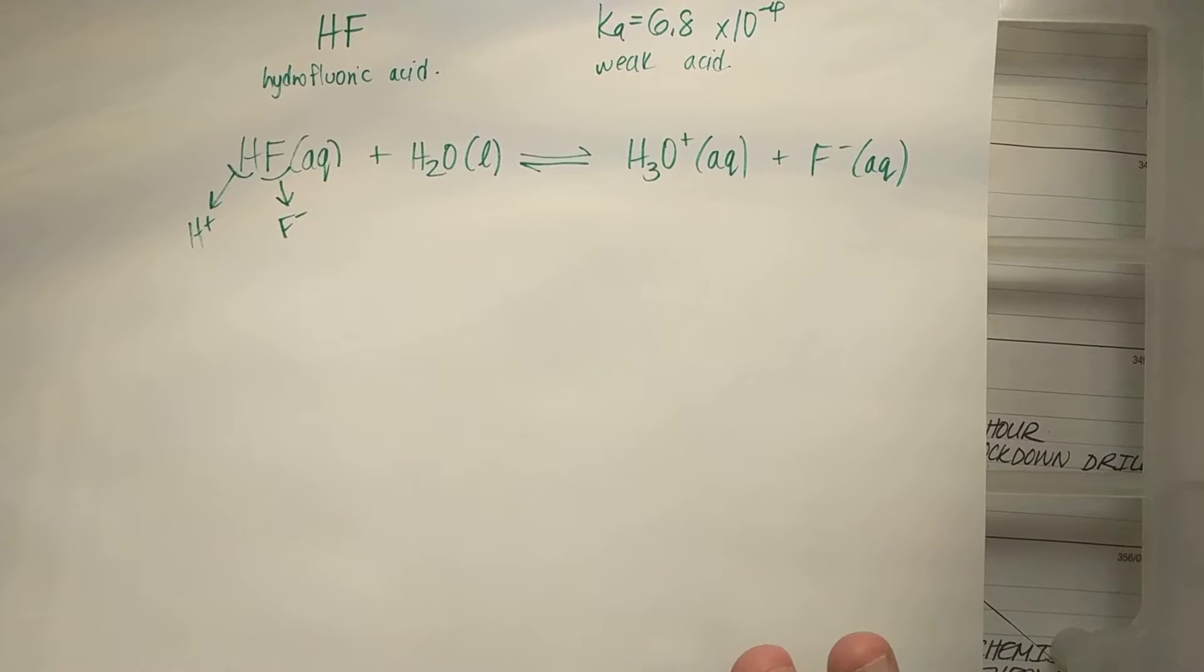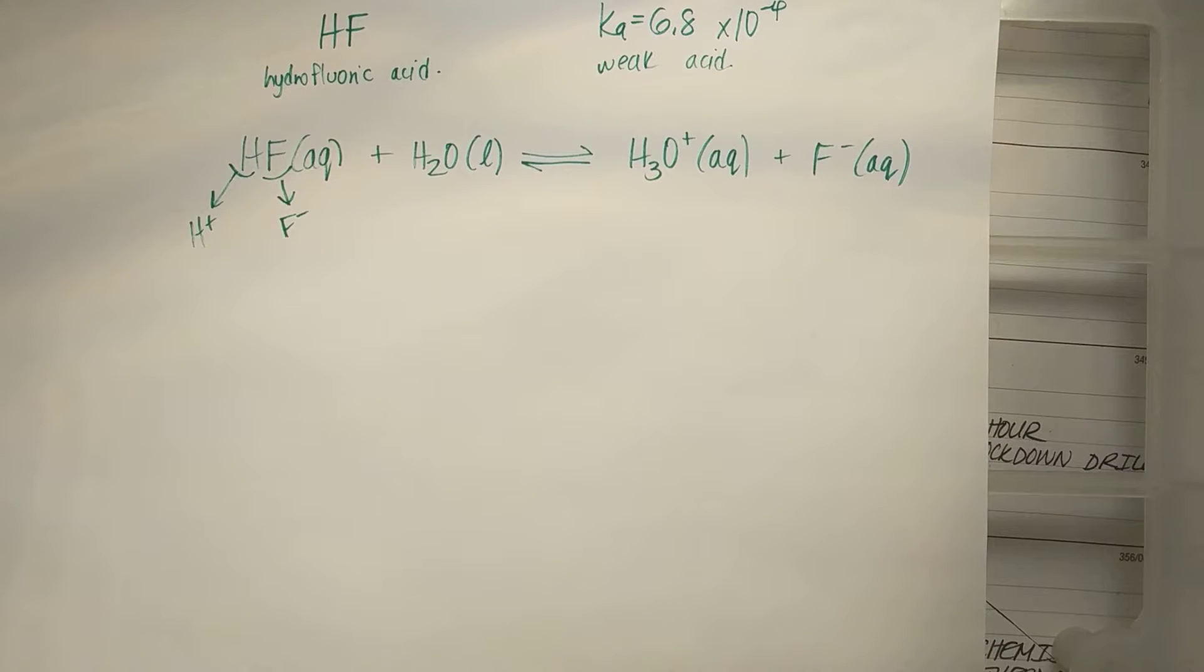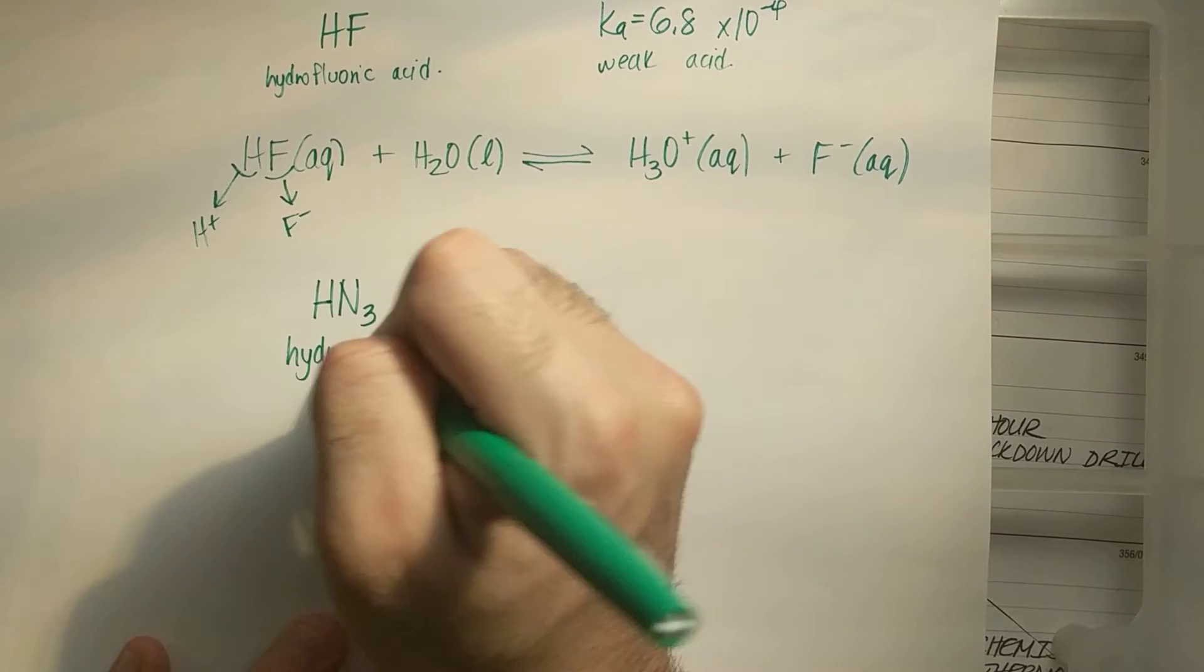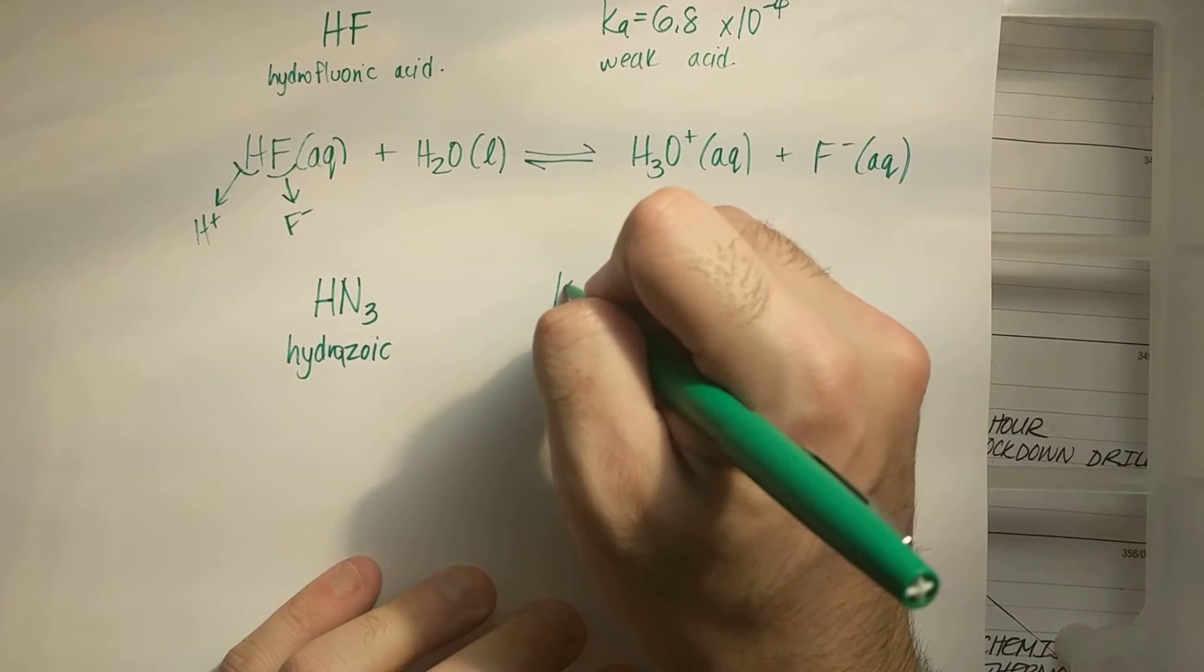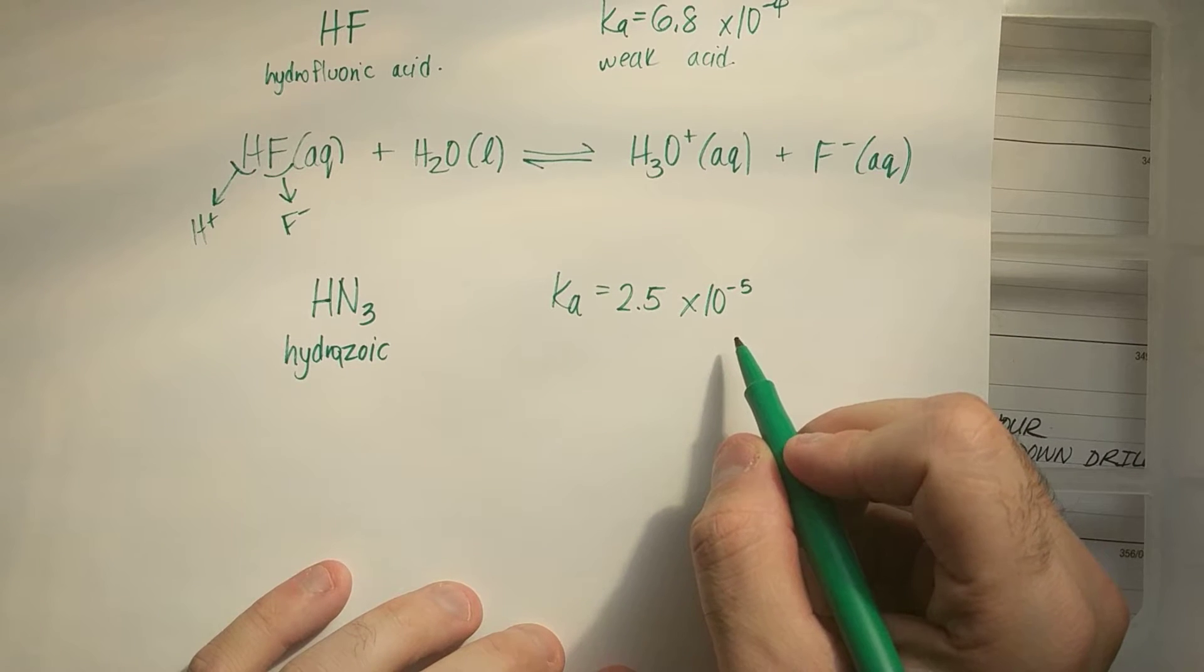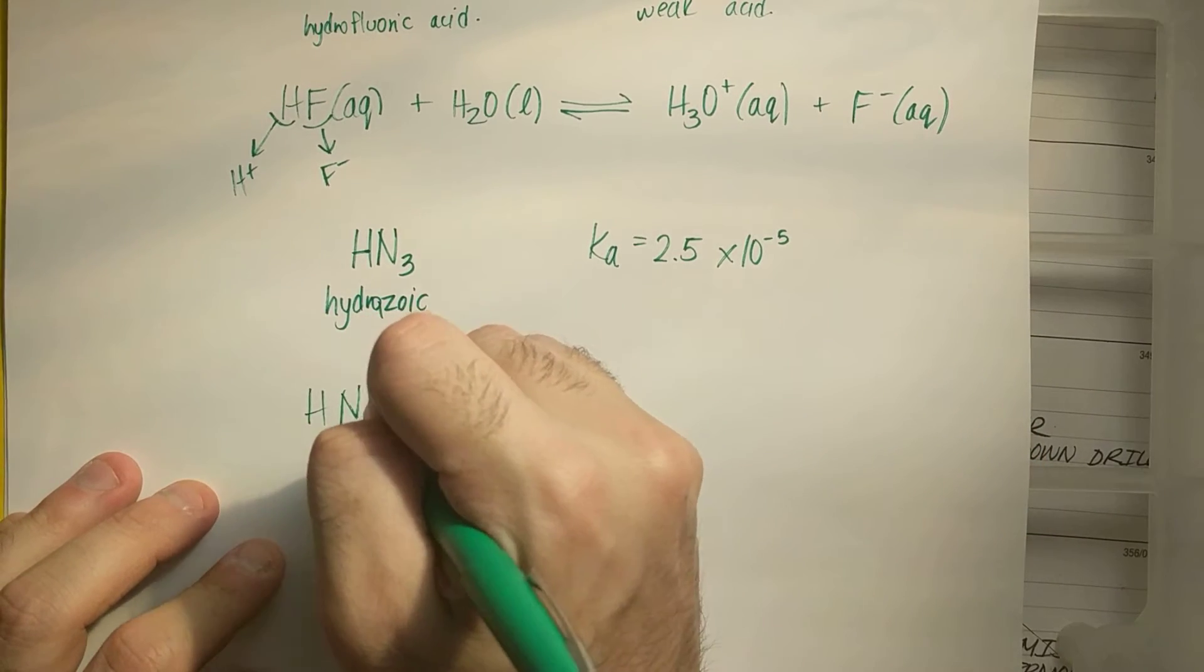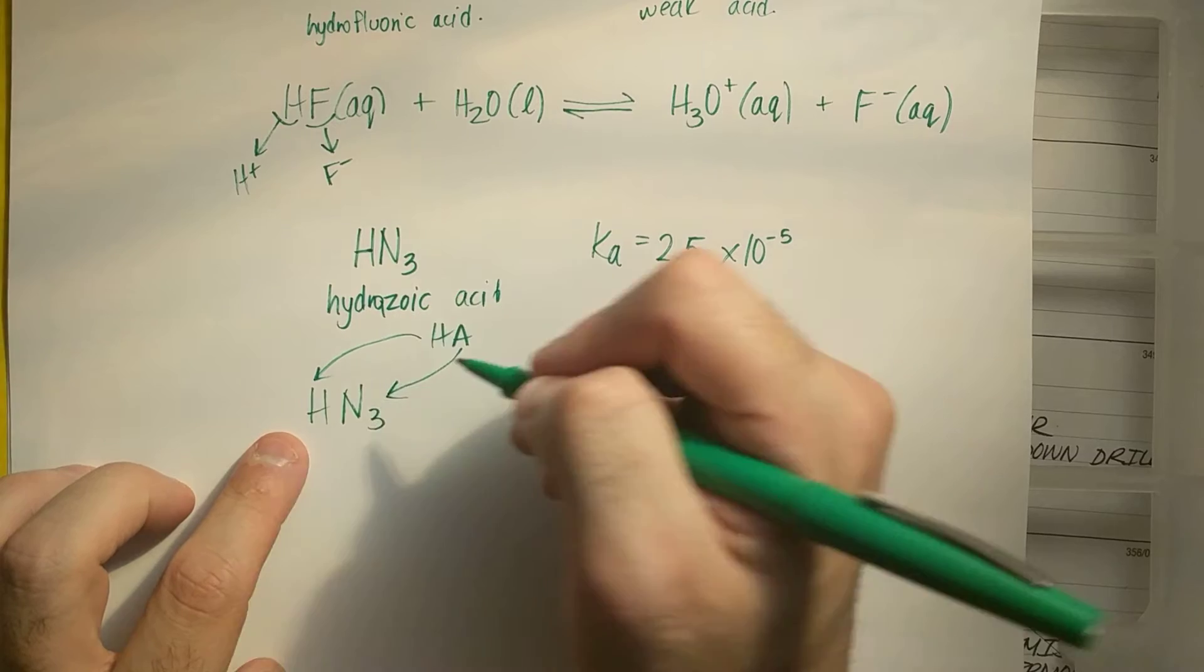Let's do one more kind of weirdish one. Hydrozoic acid. Let's say HN3. This is hydrozoic acid. Some weird acid. Hydrozoic acid. Its ionization constant is 2.5 times 10 to the minus fifth. That's quite a small ionization or dissociation constant. So if I want to write this, I have to identify my positive and negative ions. So it might be a little bit weird. But this is an acid. Hydrozoic acid. So I have HA. My H must be my H and my A must be my N3 here.